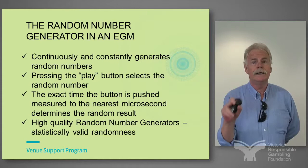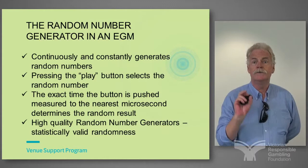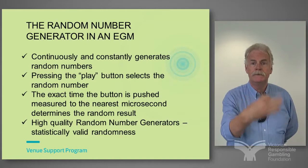Pressing the play button actually selects the number — it stops the machine at that point. Unlike the old days when you pulled the one-armed bandit and it would start the spin, with EGMs when you push the button you actually stop the process, grab the number, it goes off and checks a payout table and then represents the payout table result on the screen in front of you.